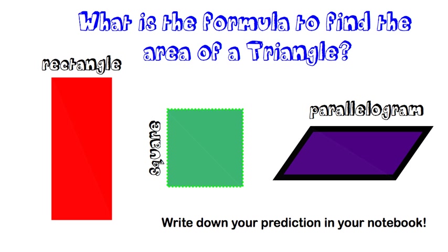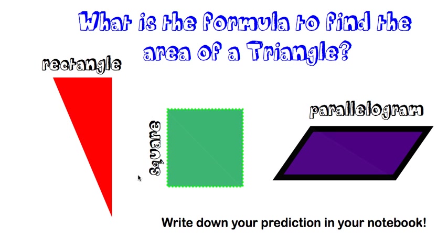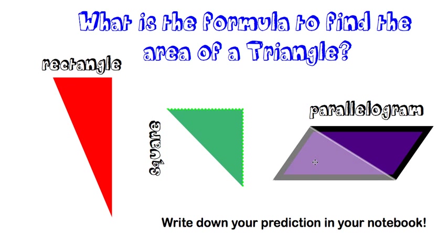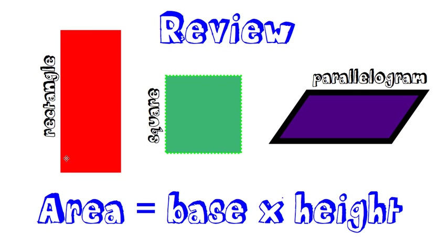Triangles are similar to this. If we take away half of a rectangle, half of a square, and half of a parallelogram, we are left with triangles. So going back, we know that for the rectangle, square, and parallelogram, the area is base times height.